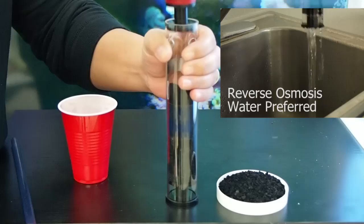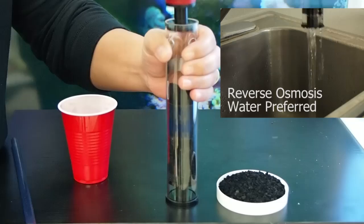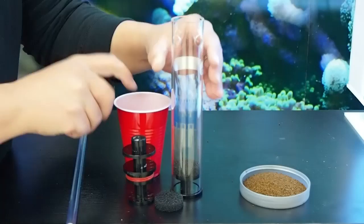Now you're ready to place it in your media reactor. If you plan on running GFO in your new Minimax reactor, it's pretty much the same as carbon. The only difference is you won't sandwich your GFO. You'll take the second sponge and run it directly underneath the cap.